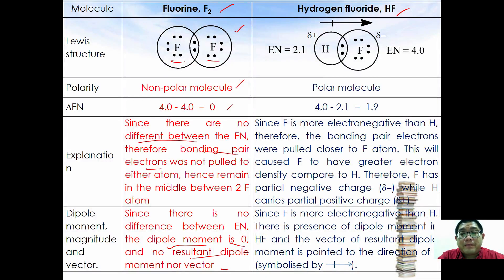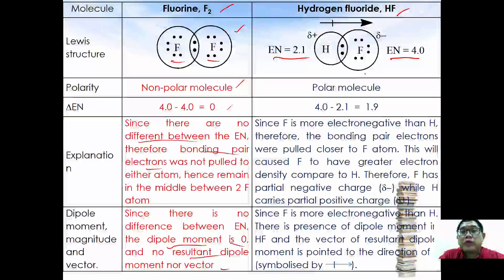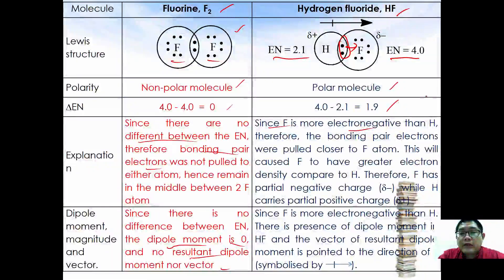Comparing this to hydrogen fluoride, HF: hydrogen has an electronegativity of 2.1 while fluorine has an electronegativity of 4.0. Due to this difference in electronegativity, HF is a polar molecule. Since fluorine is more electronegative than hydrogen, the bonding pair of electrons is pulled closer to the fluorine atom. This is because fluorine has greater electronegativity than hydrogen, resulting in greater electron density on fluorine.